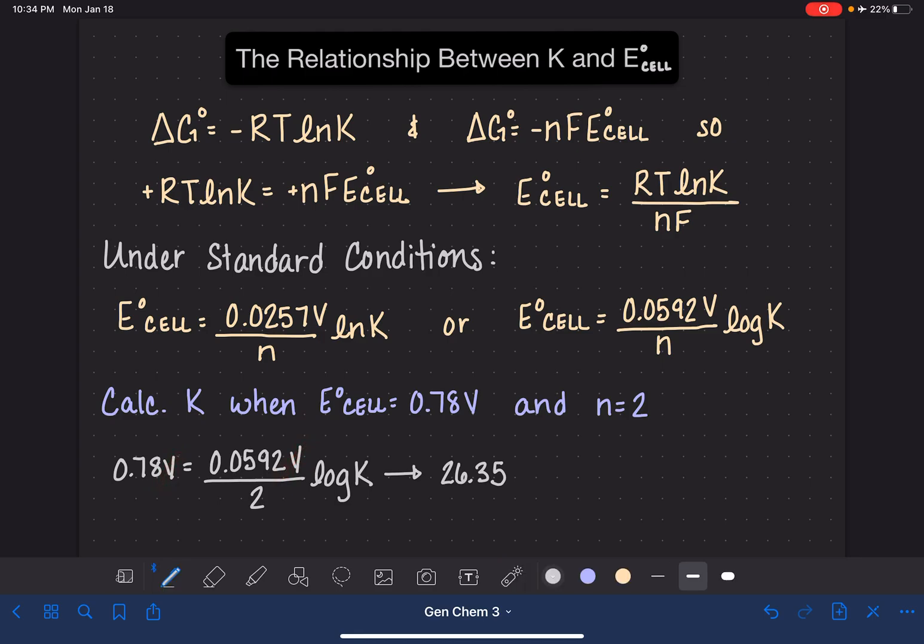But that 26.35 is going to be equal to the log of K. And then you just need to know how to undo a log, or take the inverse log. For a log, we're going to do 10 to the 26.35, which is equal to K is equal to 2.2 times 10 to the 26.